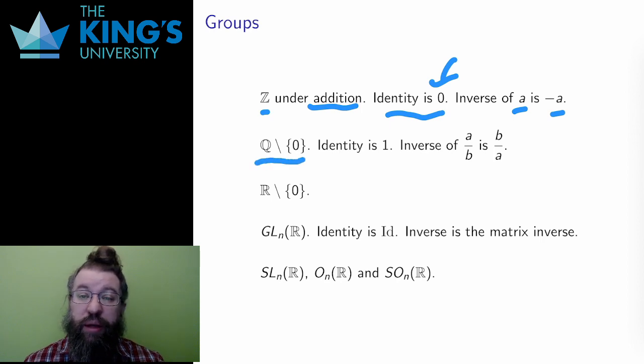The rational numbers without 0 are a group with the operation being normal multiplication. The identity is 1. Multiplying by 1 doesn't do anything. And the inverse of a fraction a over b is the fraction b over a. This works because a is not 0, since I am excluding 0 from the set, so I don't divide by 0 when I take this inverse. If I had all of the rational numbers, I would get division by 0, so this group has to be all of the fractions except any that evaluate to 0.